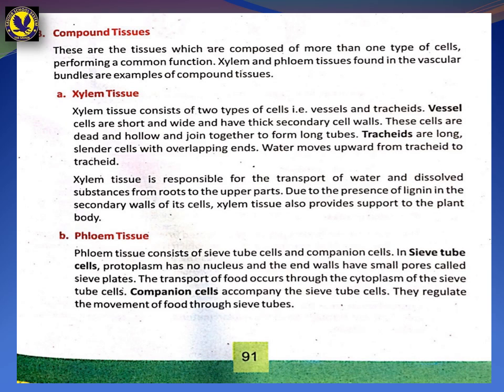The vessel cell wall is a thick secondary cell wall. These cells are dead and empty and they are connected to form tubes.